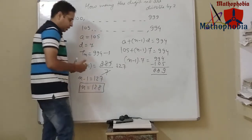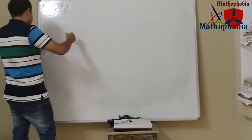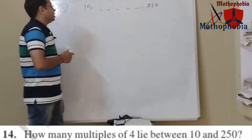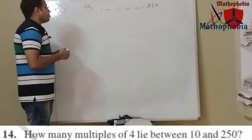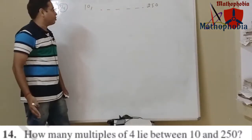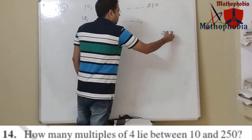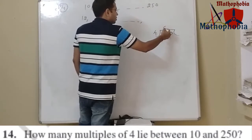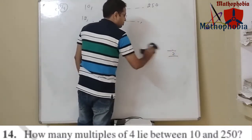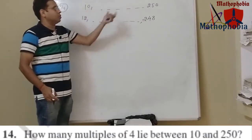Let's move on to question number 14: how many multiples of 4 lie between 10 and 250? Now 10 is not a multiple of 4, so the first multiple between 10 and 250 divisible by 4 is 12. For the last multiple, we divide 250 by 4 and get a remainder of 2. Subtracting 2 from 250 gives 248, which is the last number between 10 and 250 divisible by 4.